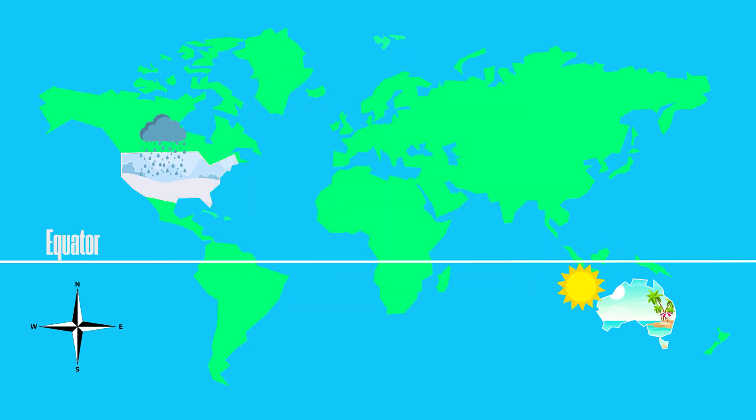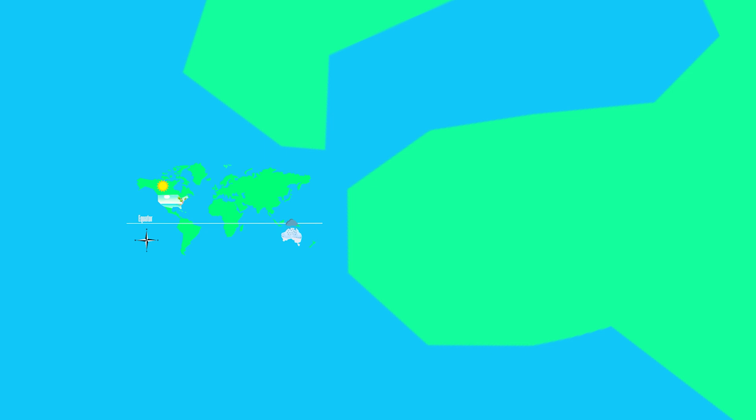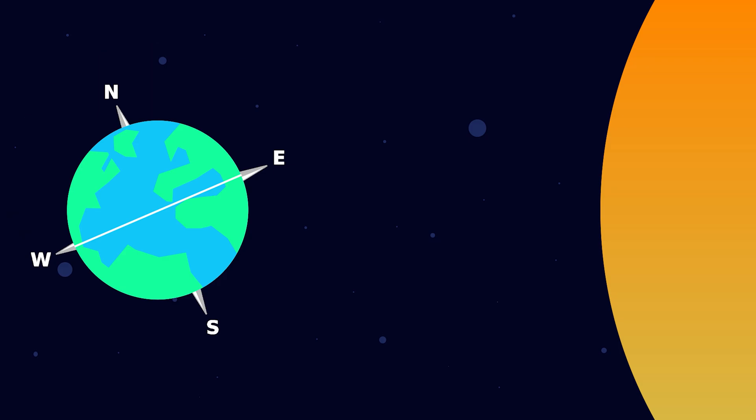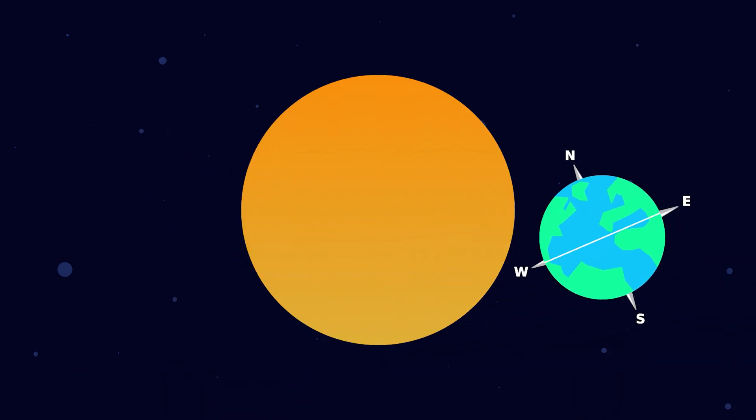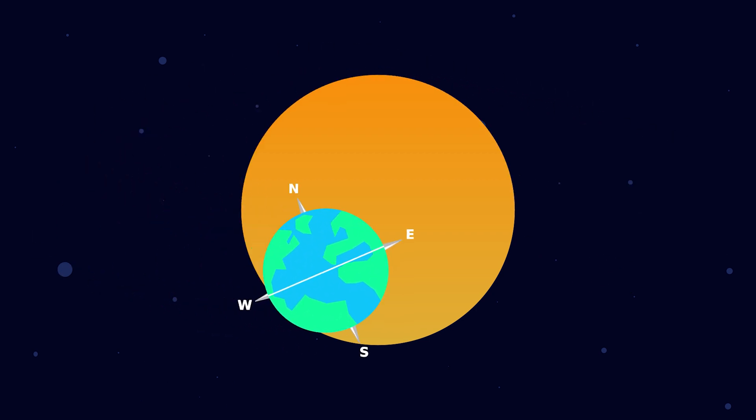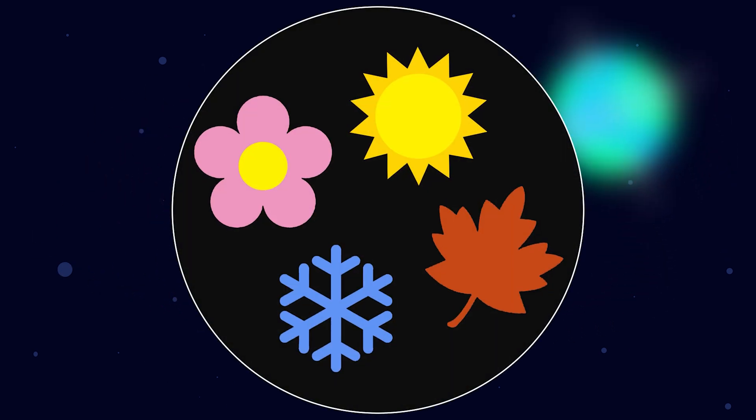Six months later, the situation reverses. The northern hemisphere is tilted away from the Sun, experiencing winter, while the southern hemisphere is tilted towards the Sun, enjoying summer. This continuous shift in the tilt of the Earth's axis as it orbits the Sun causes the regular cycle of seasons.